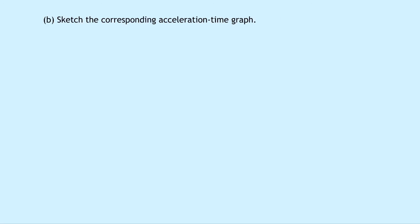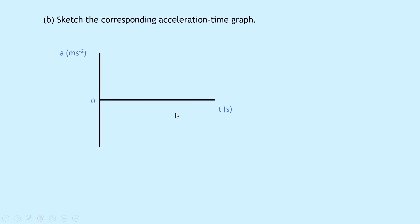Part B says to sketch the corresponding acceleration time graph. We're not asked for numerical values, but sketching the axes with labels — acceleration in metres per second squared and time in seconds — the graph shows a constant negative value of minus 9.8 metres per second squared as a straight horizontal line. The reason we have a constant acceleration is because the acceleration due to gravity acts on the ball at all times and doesn't change. In higher physics, we only use constant accelerations.